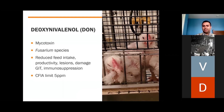Deoxynivalenol (DON) is a mycotoxin produced by Fusarium species that commonly infect crops like wheat. DON is associated with the reduction in feed intake and productivity. It can also cause lesions in the mouth and gastrointestinal tract of poultry and it can damage the villi in the small intestine, reducing overall surface area for nutrient absorption.